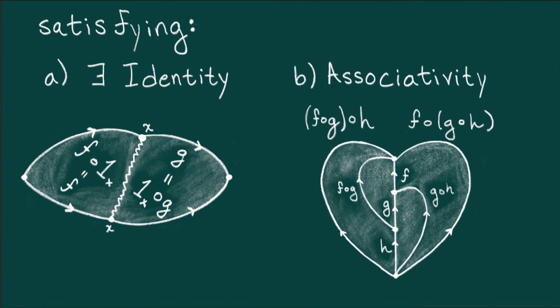A priori, these two maps could be potentially different. The associativity condition asks that they be equal. And that's it. At this point, the only mystery is how these things are useful.